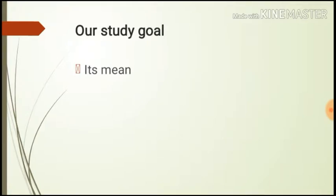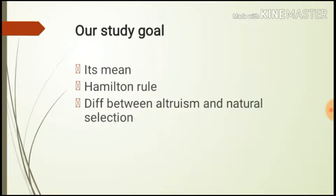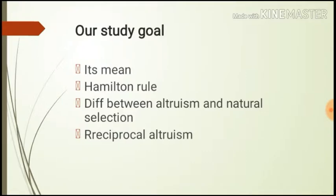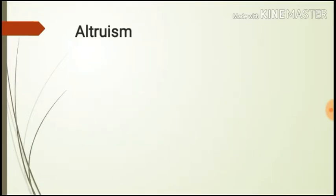First we are going to see the definition. Second, we are going to see Hamilton's Rule. Third, we will see differences between altruism and natural selection. Fourth, we will see reciprocal altruism. And fifth, we are going to see kin selection. So let's see first of all: what is altruism?